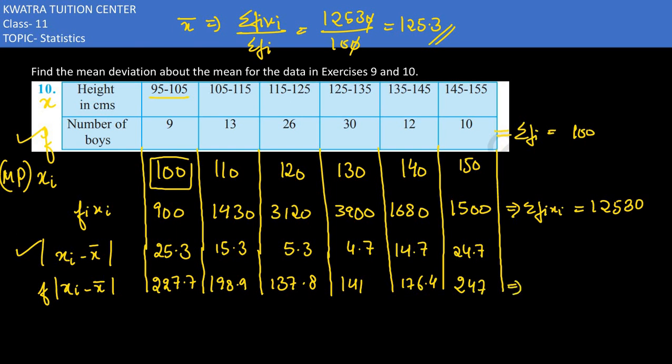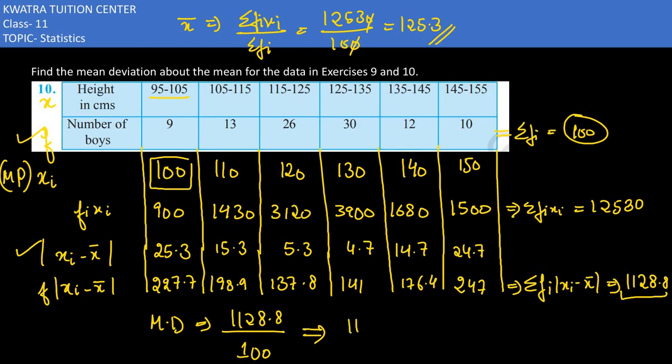Now add up all these values. This would give you summation fi times xi minus x bar. Add up all the values, you will get in total 1128.8. The mean deviation is this value divided by total frequency, which is 100. So 1128.8 divided by 100 gives you 11.288. That is your mean deviation about the mean.